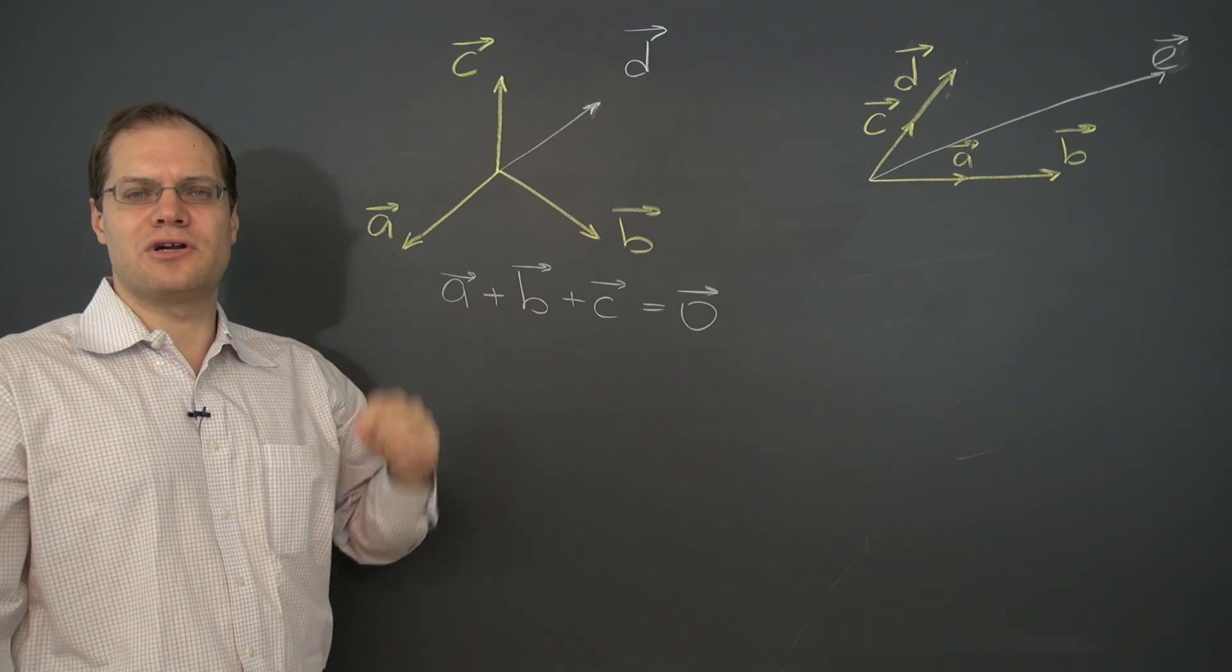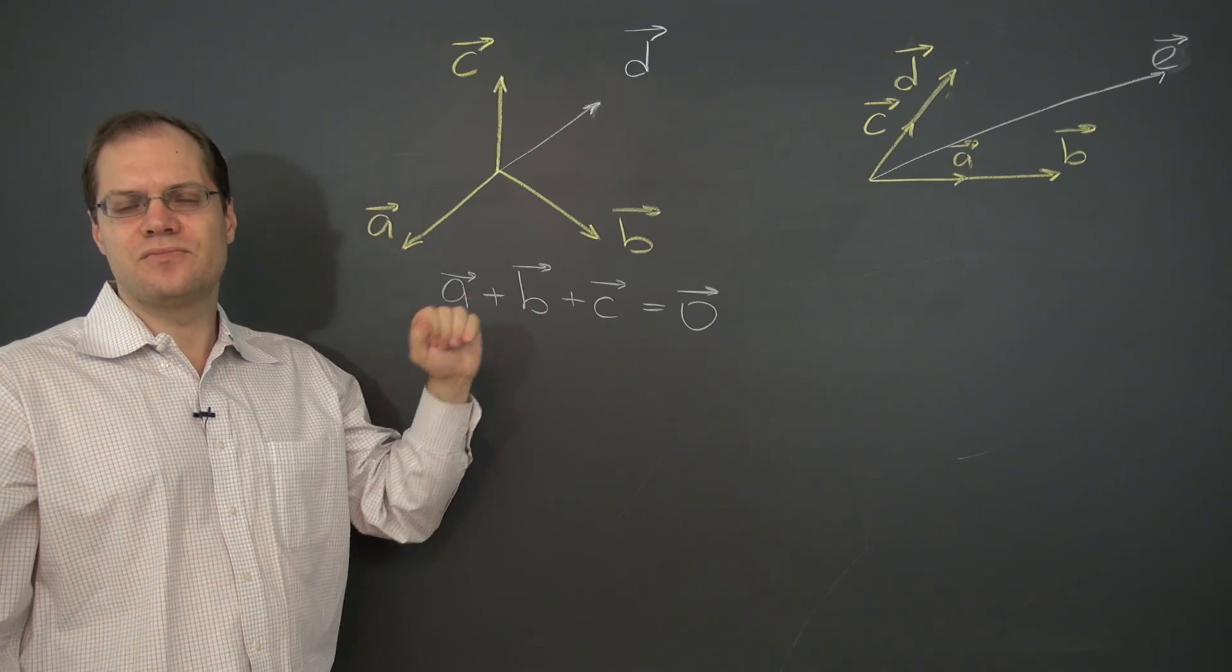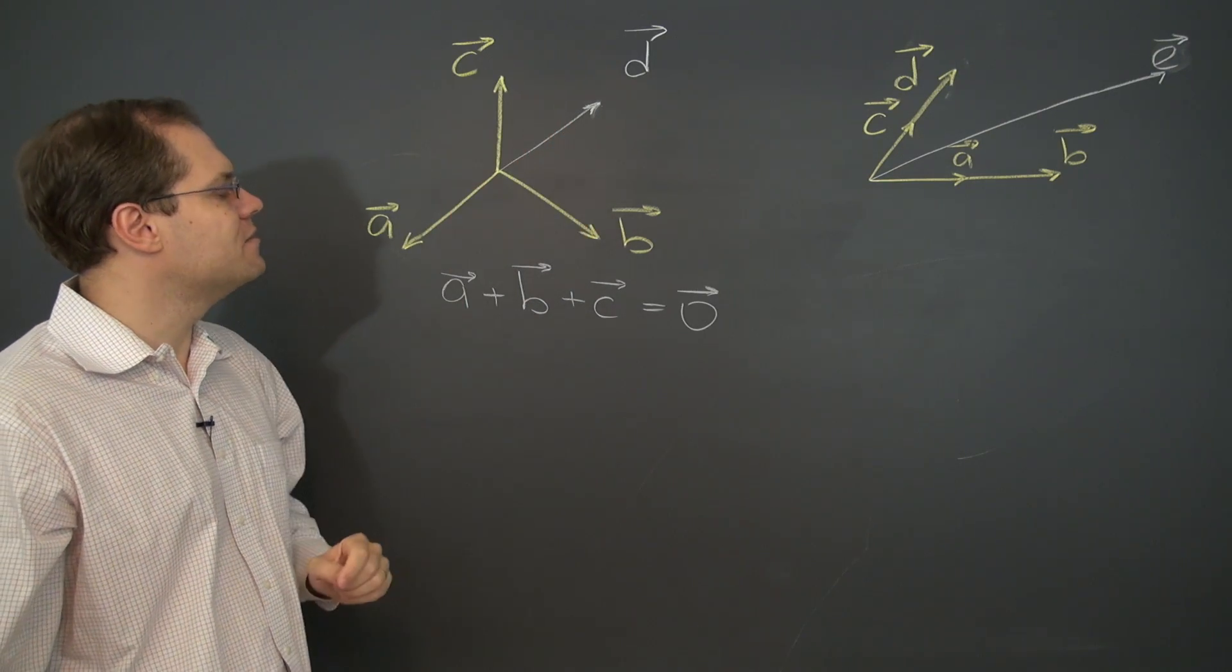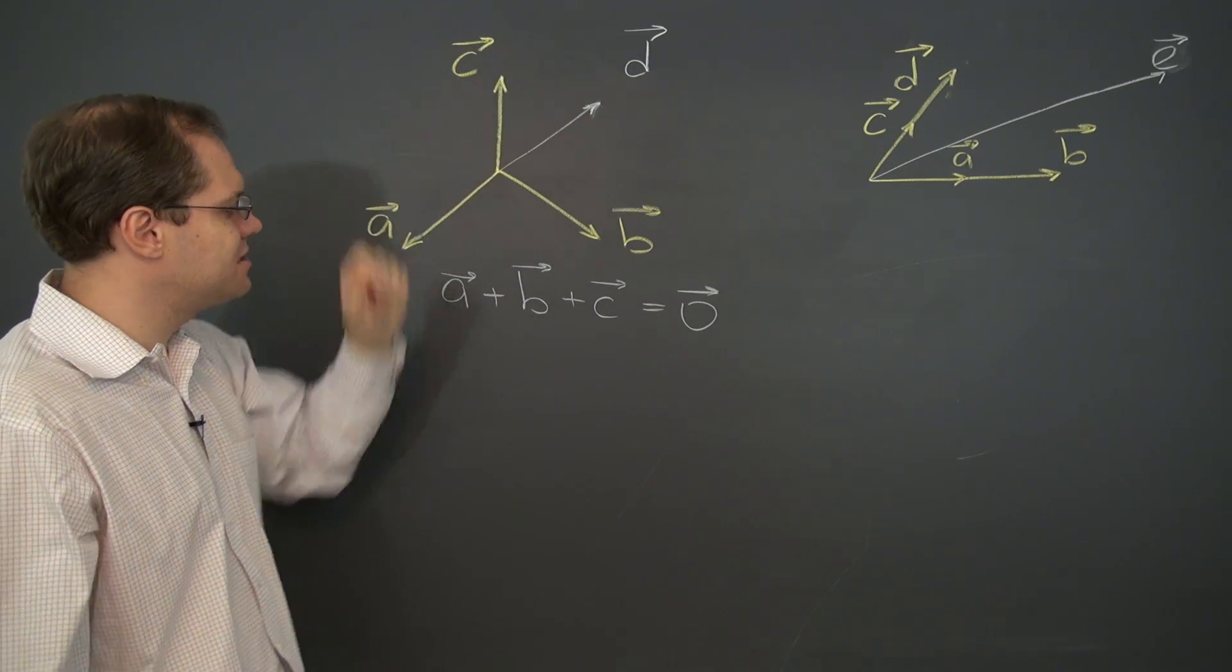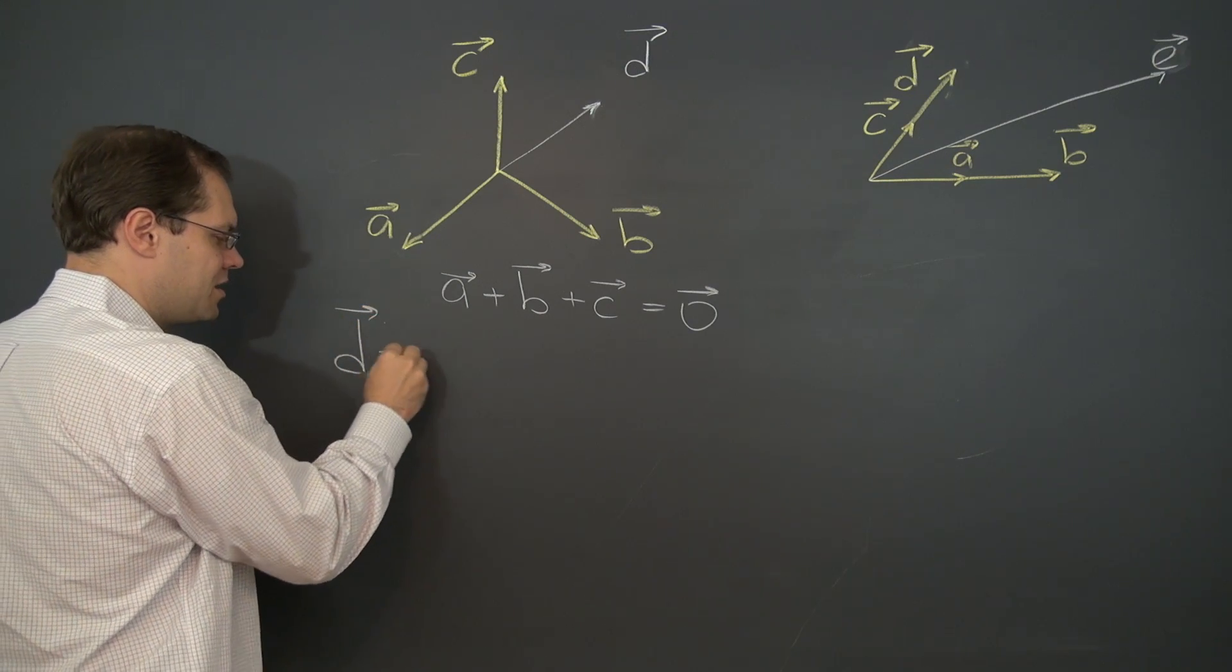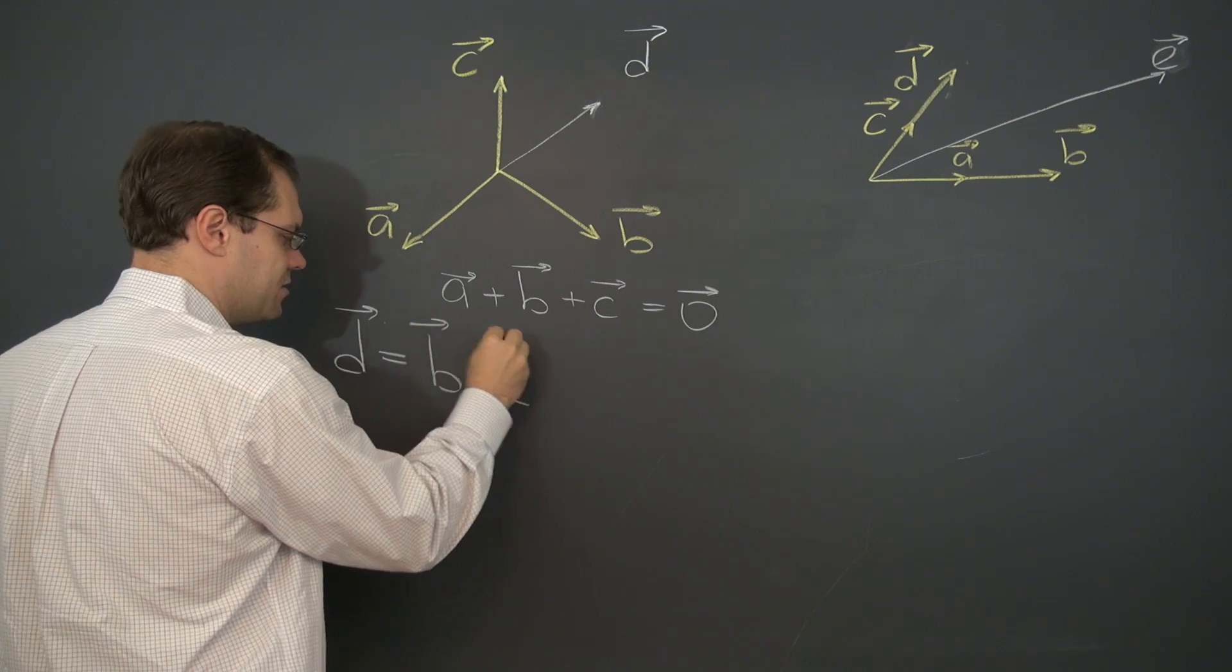So this is our quote unquote fancy zero right here and that will be the key to discovering all possible linear combinations that give d. So one of the ways to obtain d is to say that it's b plus c. So here's one way of doing it. So d equals b plus c. That's one particular way of doing it.